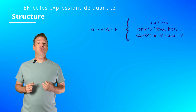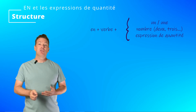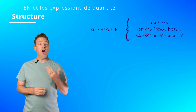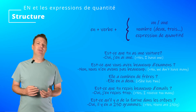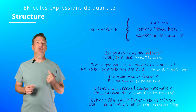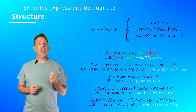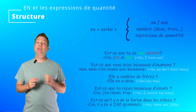Now we are going to review how to use the EN pronoun with expressions of quantity. The pronoun EN can be used to replace a direct object introduced by an indefinite article — UN for masculine or UNE for feminine — a number, or an expression of quantity. So the structure is: EN plus VERB plus UN/UNE, number, or expression of quantity. Par exemple, est-ce que tu as une voiture? Oui, j'en ai une. Here we use EN to replace 'une voiture', the COD introduced by the indefinite article UNE. So 'j'en ai une' follows the structure: EN plus VERB, plus the quantity — here the number ONE, UNE for feminine.